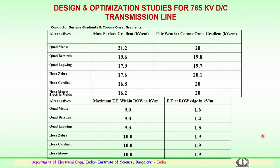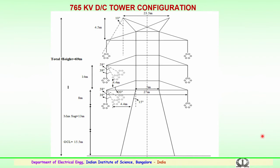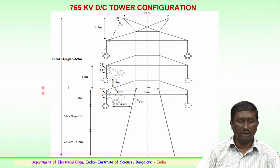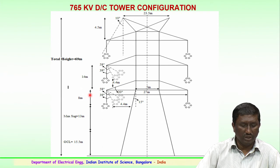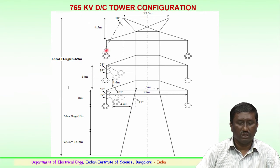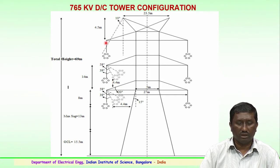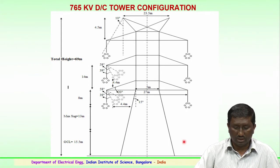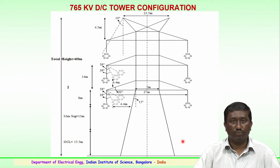These are the design and optimization studies carried out for the double circuit 765 kV transmission line. The line diagram of the tower configuration of 765 kV DC tower shows the total height, maximum sag, minimum clearances, and number of conductors in a hexagonal arrangement. The minimum clearance from ground to the phase metal part at the tower edge is 4.5 meters, and ground to ground is 23.5 meters.